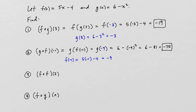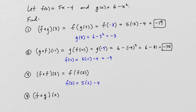Then we take g of negative 9: that's 6 minus negative 9 squared. Be careful — these do not turn into a positive because we must square negative 9 first. Negative 9 squared is 81, so this is 6 minus 81, which equals negative 75. Next, f of f of 2: we plug 2 into f to get 5 times 2 minus 4, which is 6. Then f of 6 is 5 times 6 minus 4, which is 30 minus 4, which equals 26.